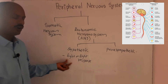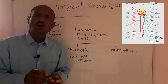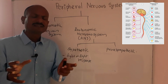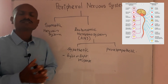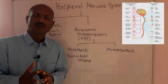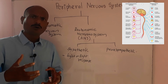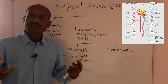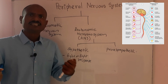In a threatening or dangerous situation, the sympathetic nervous system works. For example, if you go into a jungle and a lion is chasing you, the activities of your body will speed up — your heart beat will increase.